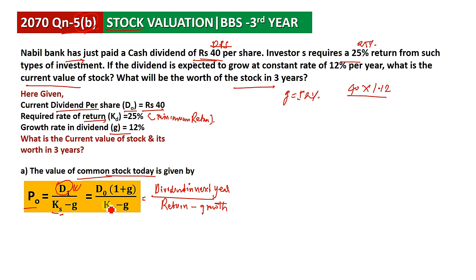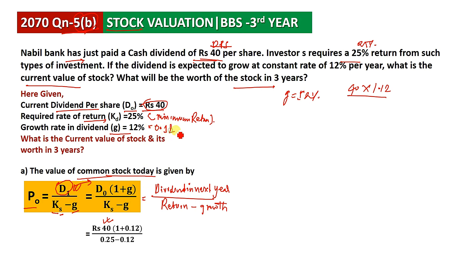Here g is the growth rate, D1 comes from D0. D0 is 40 as given in the question. D1 equals D0 into 1 plus g, so g is 0.12 and Ks is 0.25. After calculation, the answer is 344.62. This is the current value of the stock.